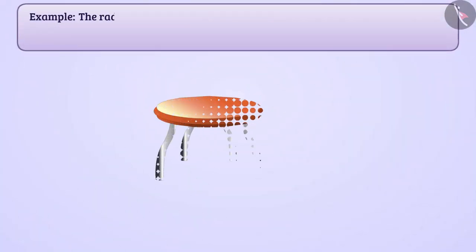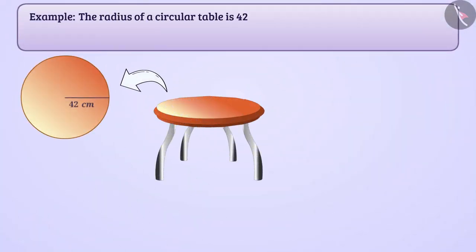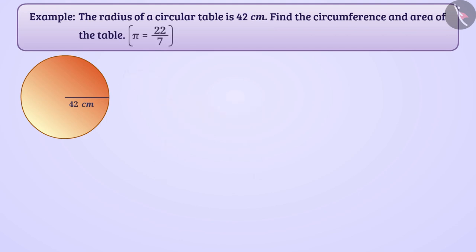The radius of a circular table is 42 cm. Find the circumference and area of the table. For convenience, take π = 22/7. The radius of a circular table is r = 42 cm.